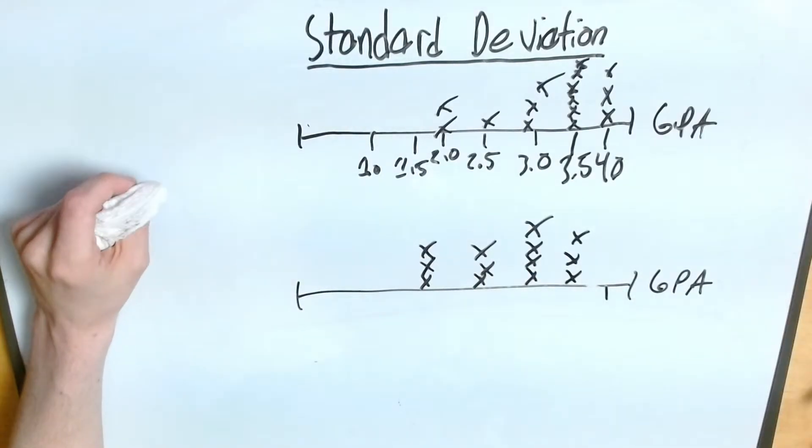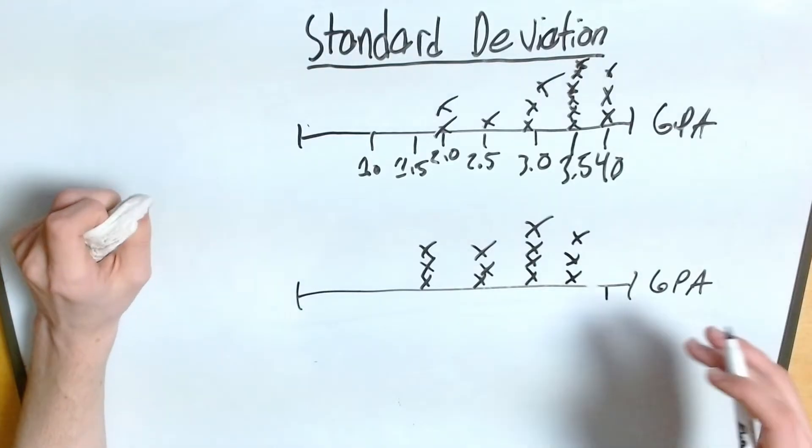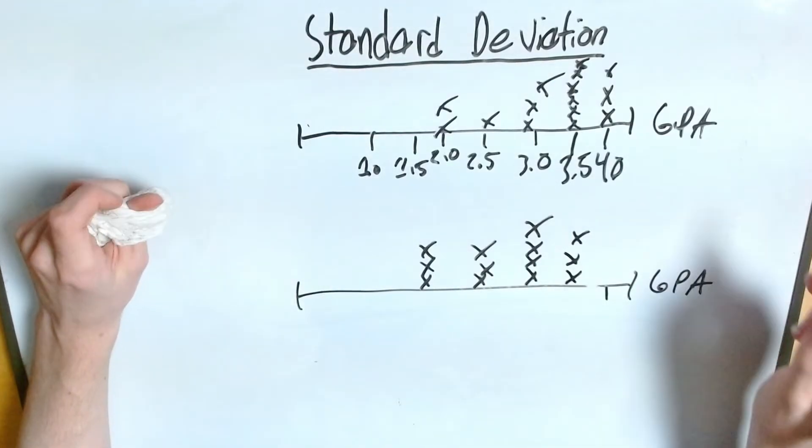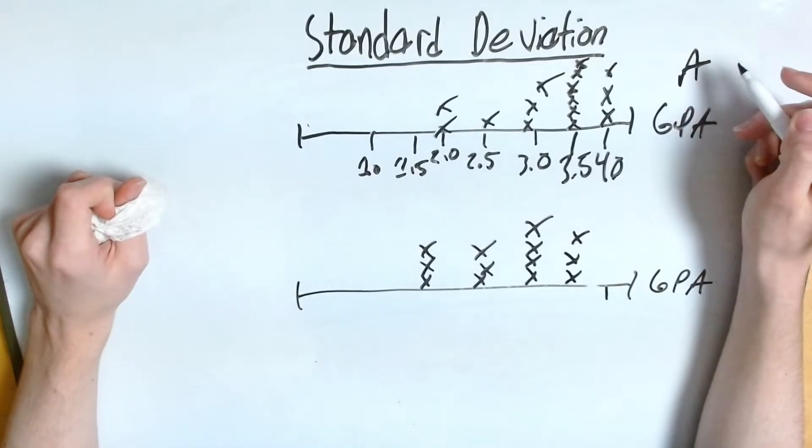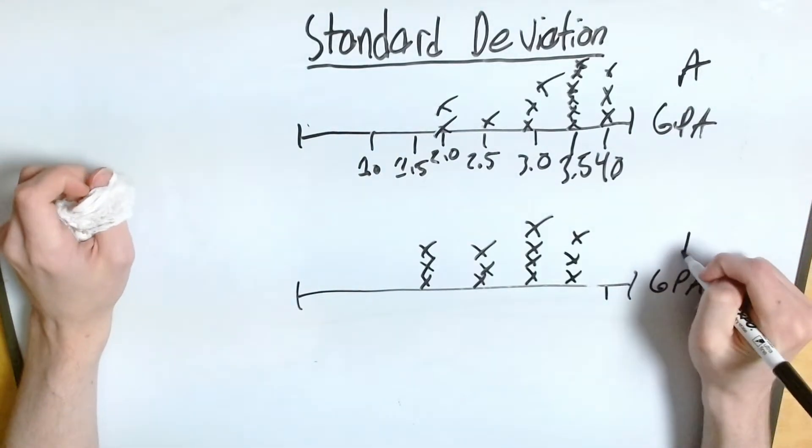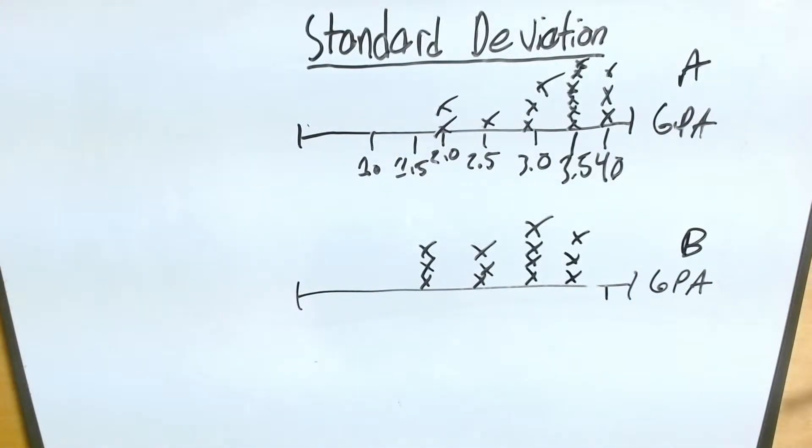So, the question would be which school has a greater or smaller standard deviation. Does school A have a greater standard deviation or school B have a greater standard deviation? And thankfully to answer this question, it's actually pretty simple. We don't need to do any calculations whatsoever. We can actually figure out this answer just by looking at the graph or at least our data collection here.